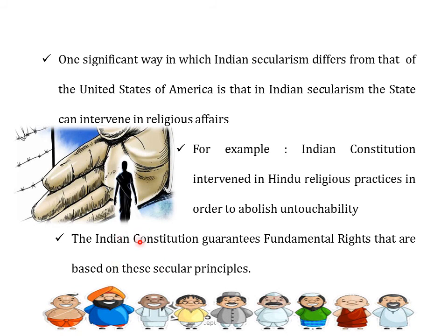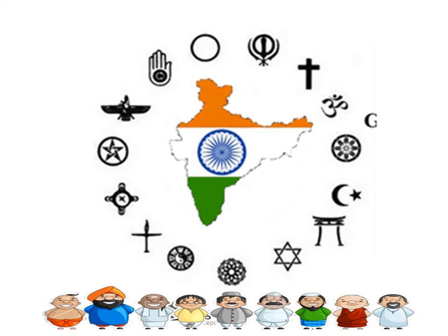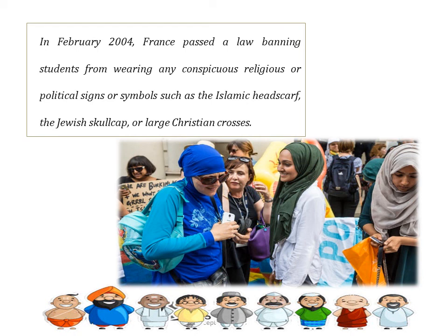An example of religious discrimination occurred in France in February 2004, when France passed a law banning students from wearing any religious or political signs or symbols, such as an Islamic headscarf, a Jewish skull cap, or large Christian crosses. This law encountered a lot of resistance from many immigrants who came from former French colonies, and many students were expelled from school for wearing headscarves. This is a clear example of discrimination against minority groups.